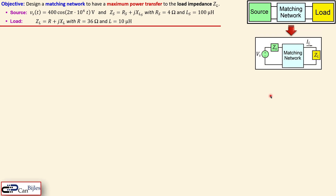We want to design that matching network for maximum power transfer from the source to the load. We can see the source impedance, the load impedance, and the load current. There are many different options, but in this case we will go for a transformer. Let's proceed with the calculations.